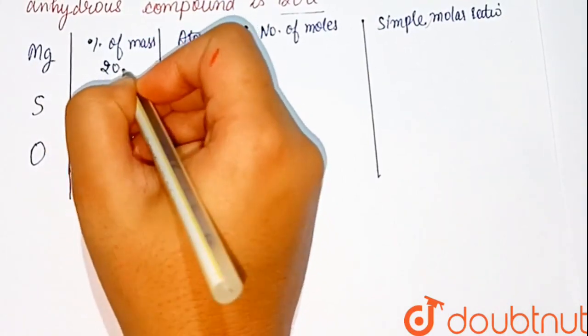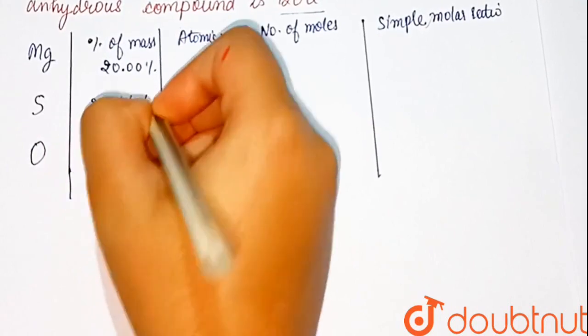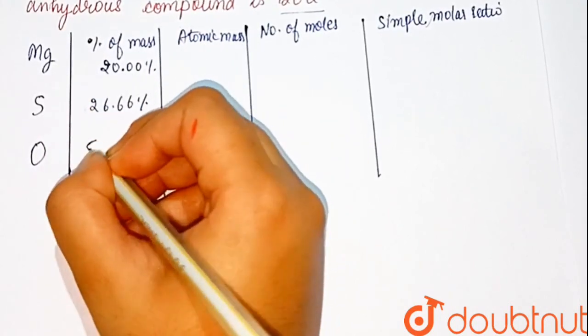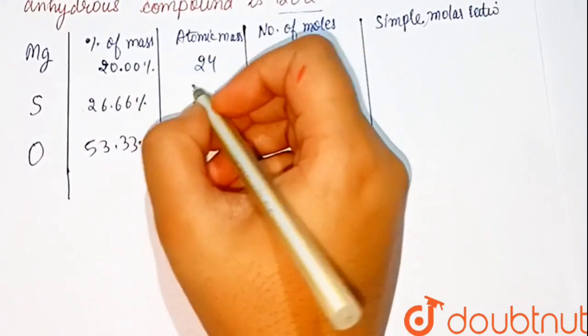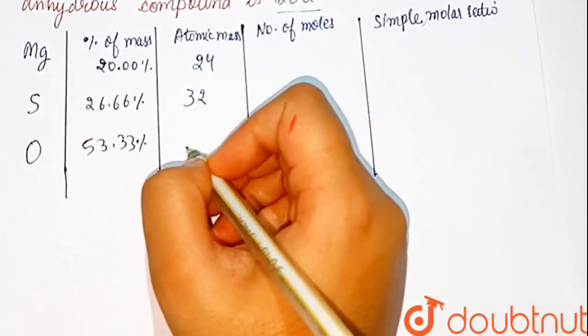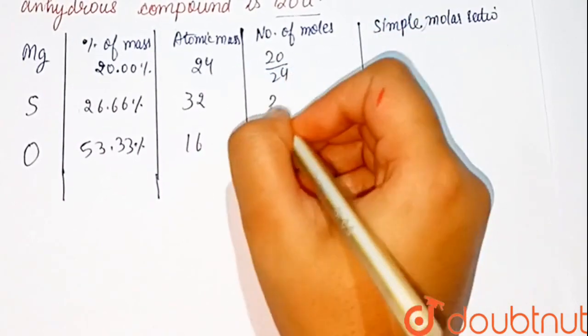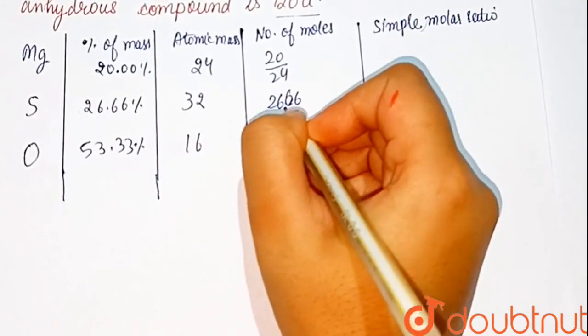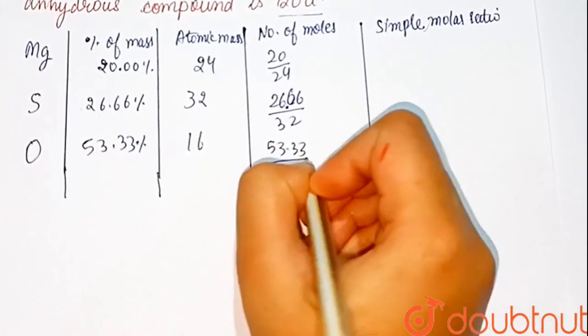So, magnesium percentage is 20.00%, sulfur is 26.66% and oxygen is 53.33%. Now, atomic mass: 24, 32, and 16. Now, divide 20 by 24, 26.66 divided by 32, 53.33 divided by 16.